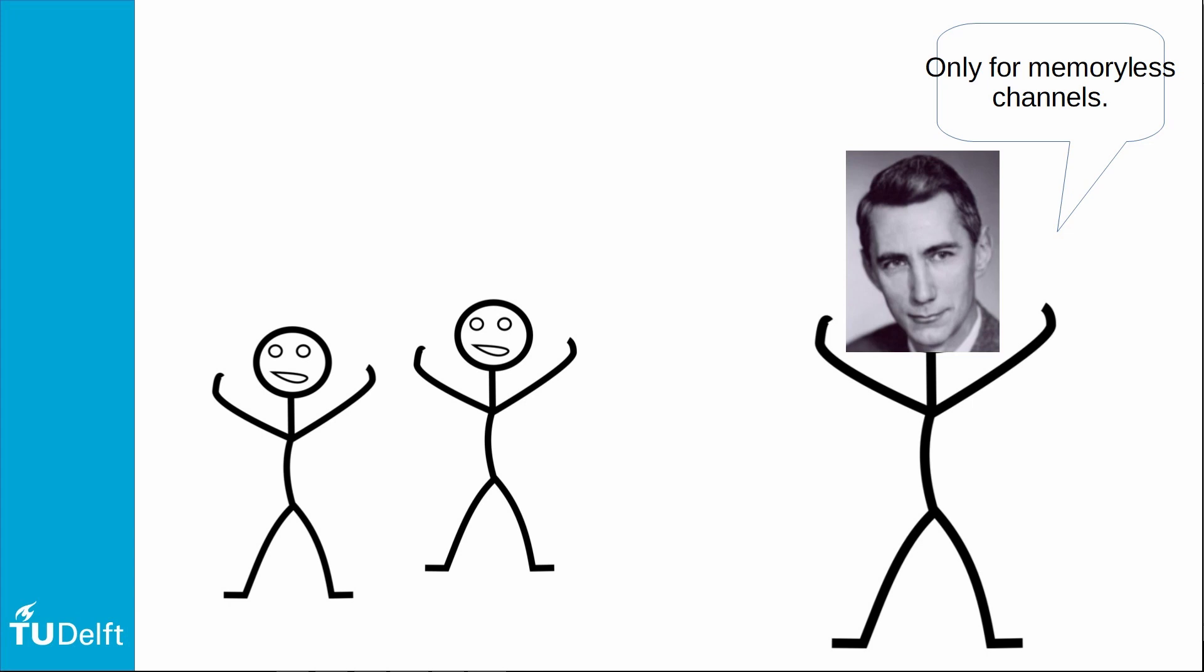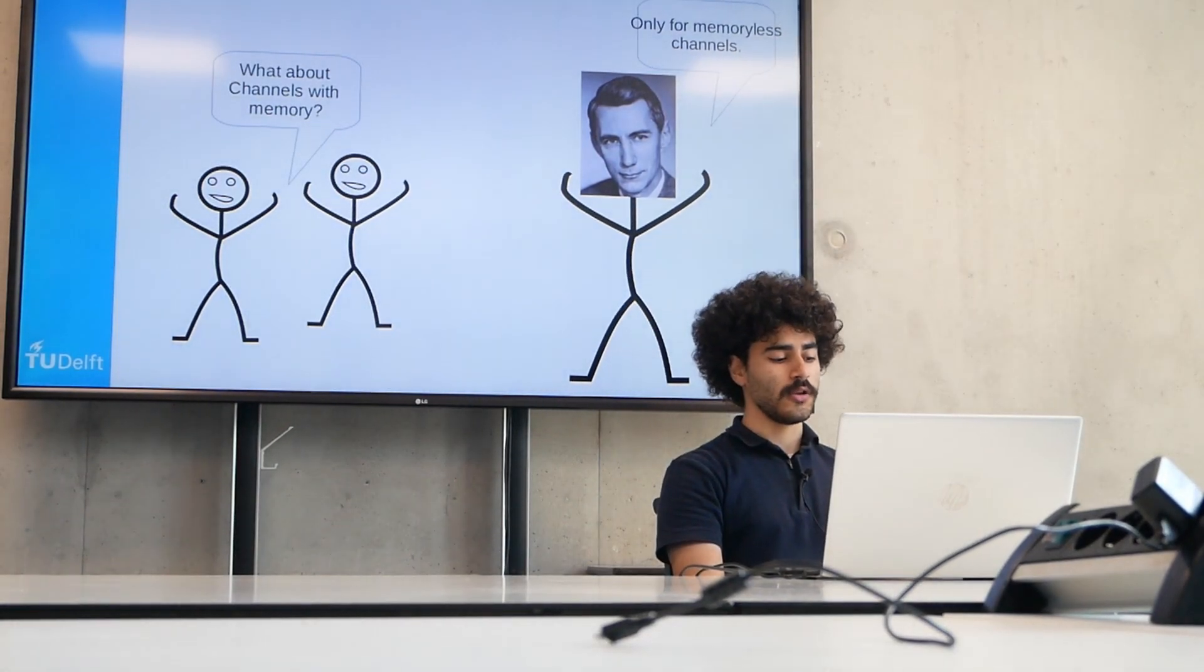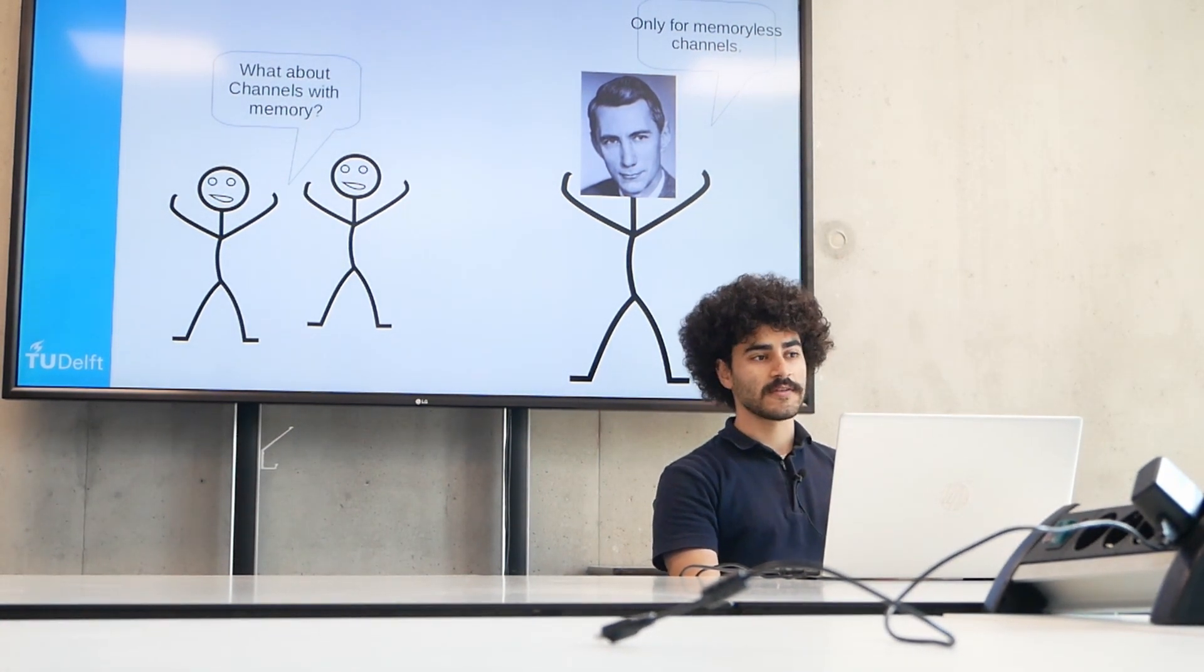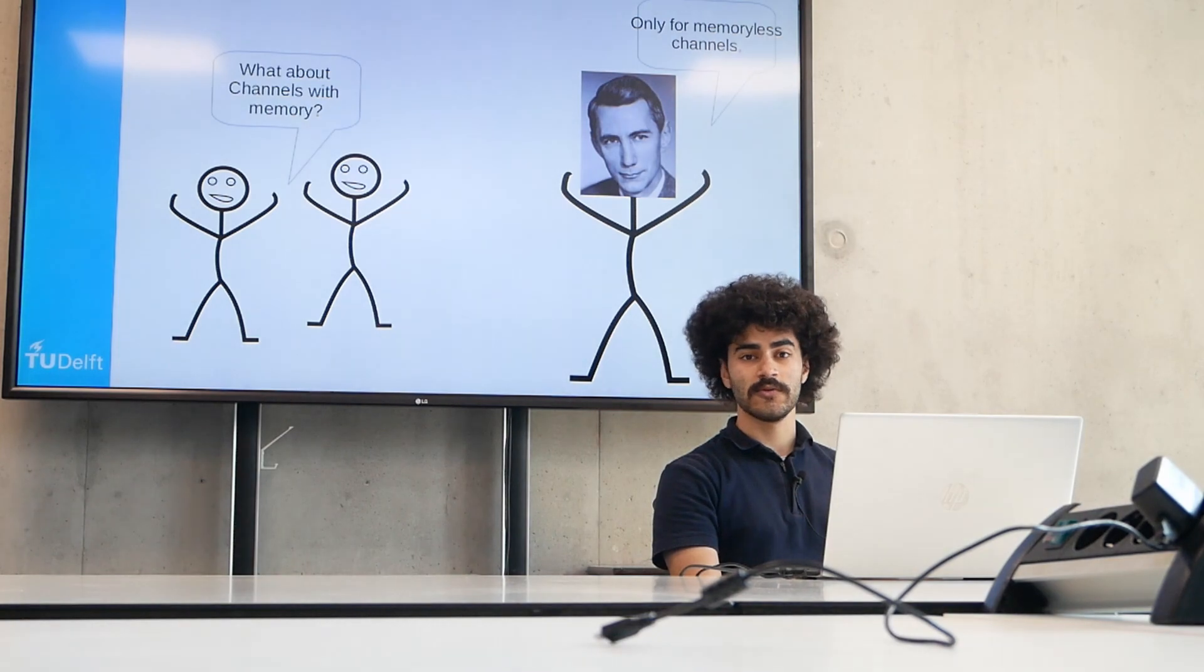These are channels that don't change from one use to the next. On the other hand, there are also channels with memory. And these are channels that change from one use to the next. So the current output does not depend only on the current input. It also depends on all previous inputs. And in that sense, the channel is keeping memory of the past uses.